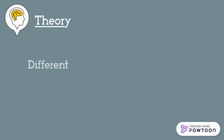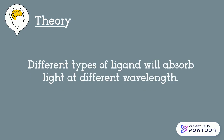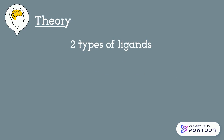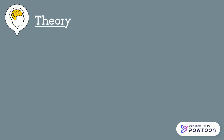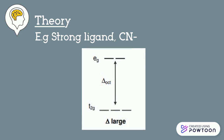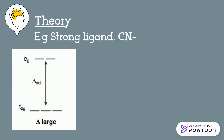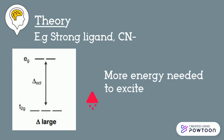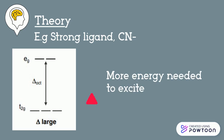However, different types of ligand will absorb light at different wavelengths. There are two types of ligands: strong and weak ligands. For example, if we have a strong ligand such as cyanide attached to the metal, the difference in energy splitting of the two energy levels will be higher. So more energy is needed for the electrons to excite, and therefore it will absorb light with shorter wavelength values.